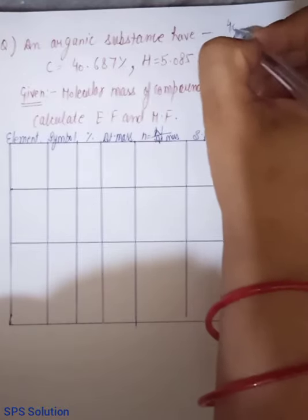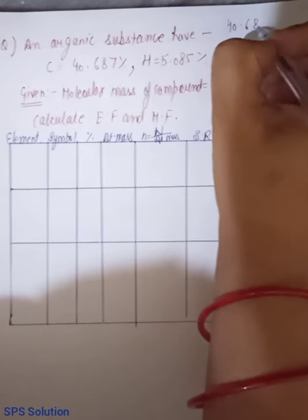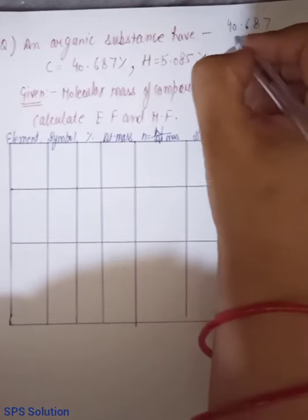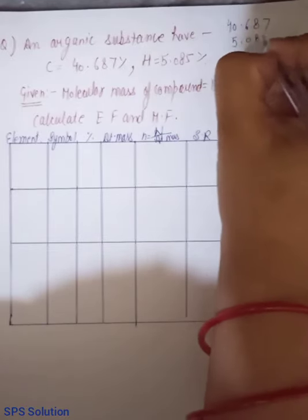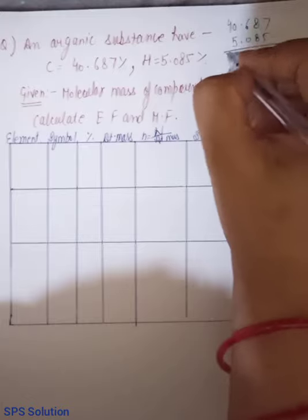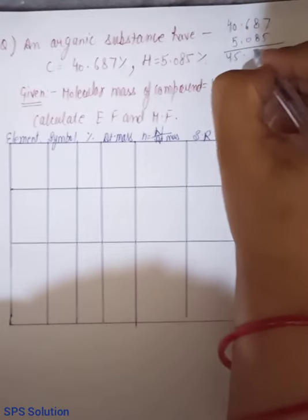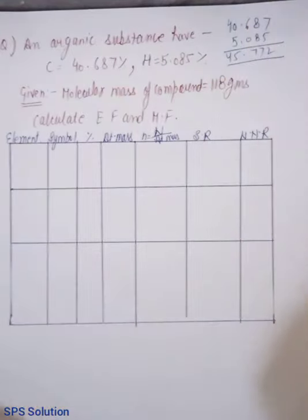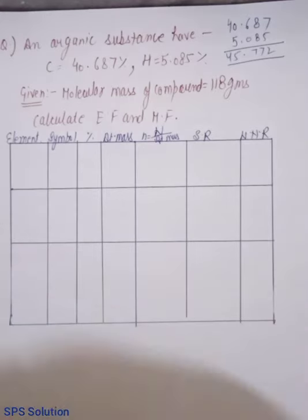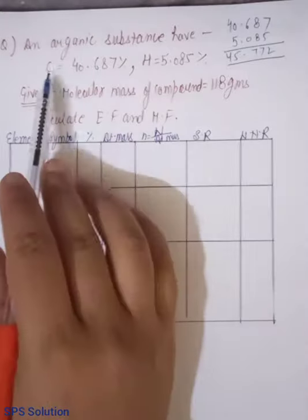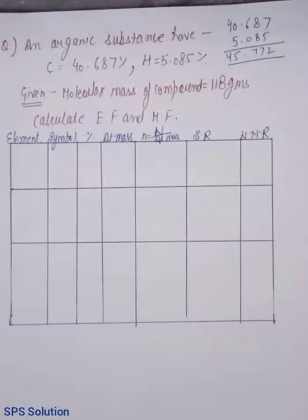Agar hum in dono ko add karte hain, so it is 40.687 and it is 5.085. That comes out to be 45.772%. To, yeh hamara 100% to total hai nahi. Iska matlab ki, we are missing something in this question. Jo question mein given nahi hai, but, it simply happens ki, agar question mein puri information nahi hai, hamein 2 elements, 2 components, jo hai, atoms bata di hain.